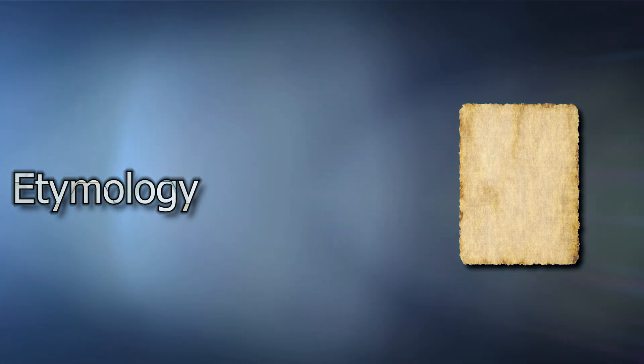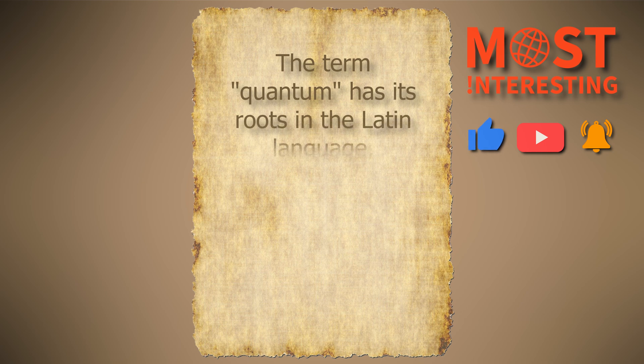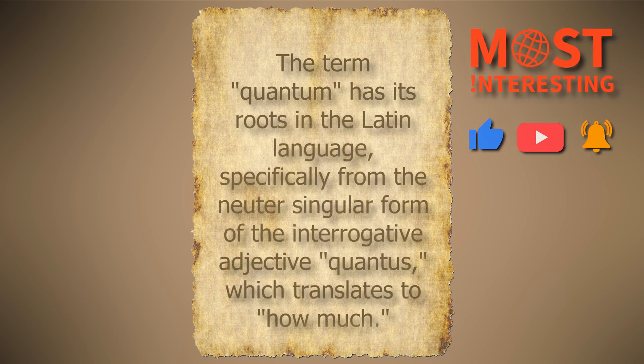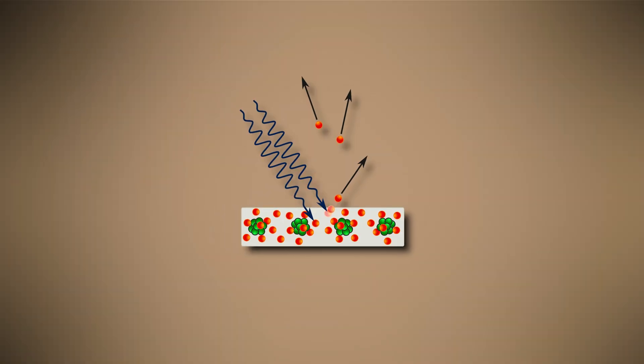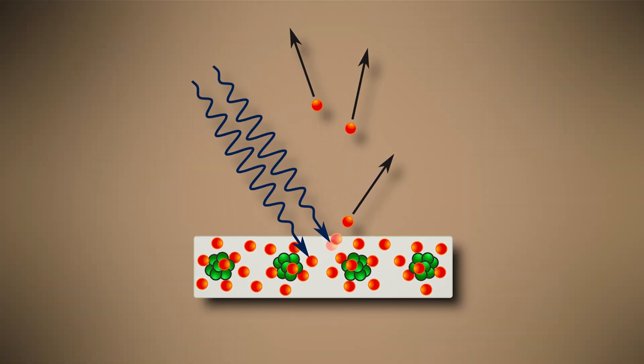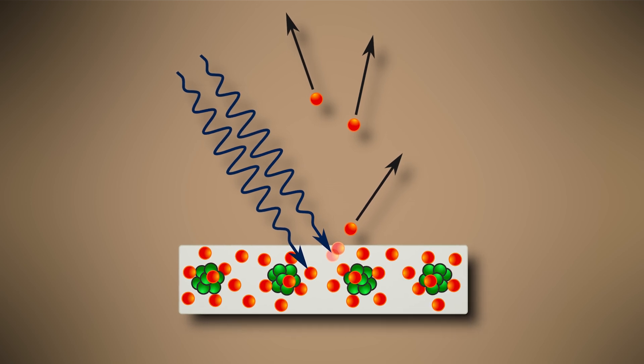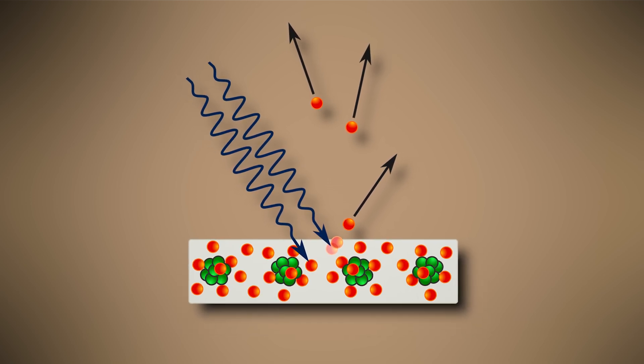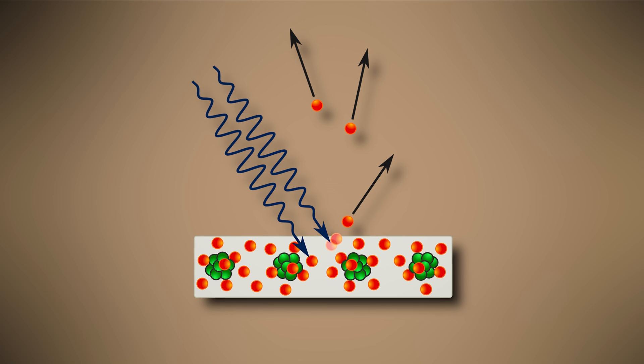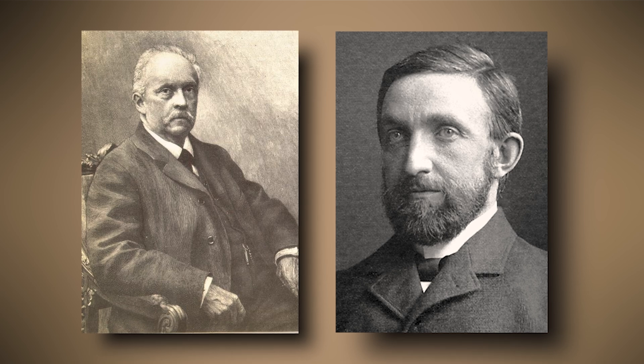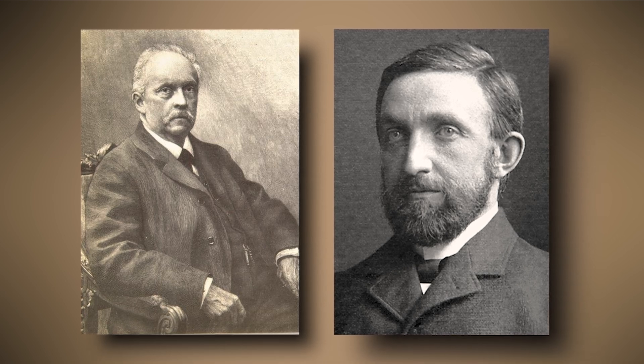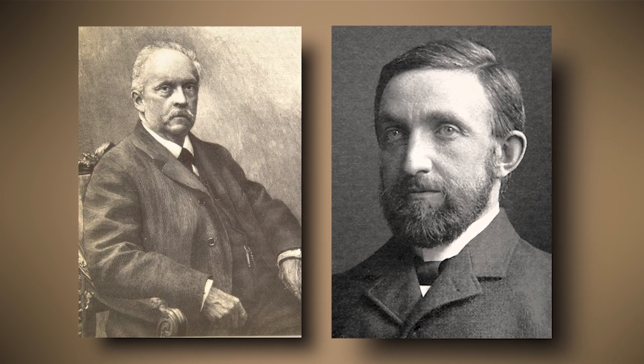The term quantum has its roots in the Latin language, specifically from the neuter singular form of the interrogative adjective quantus which translates to how much. The plural form quanta was employed to refer to quanta of electricity, referring to electrons in a 1902 article on the photoelectric effect by Philip Leonard. Leonard credited Hermann von Helmholtz for initially using the term in the context of electricity.